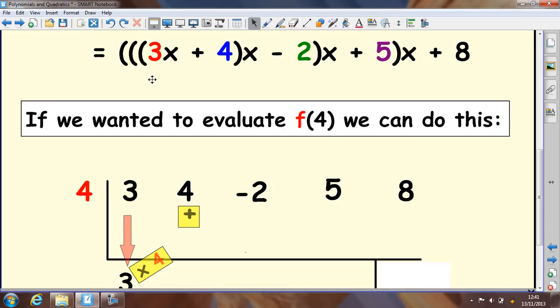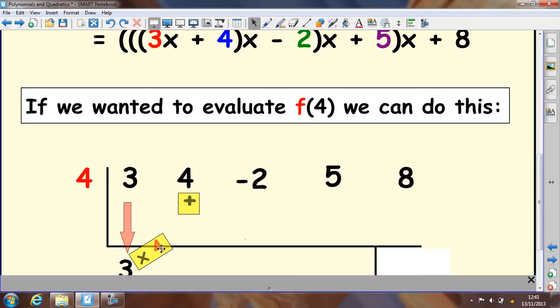Now, the first thing you want to do is multiply. If we were to substitute that up here, we would do 3 times 4, and then we would add 4 on. Now, you do that in the table by dropping the first number down to the bottom, the 3.